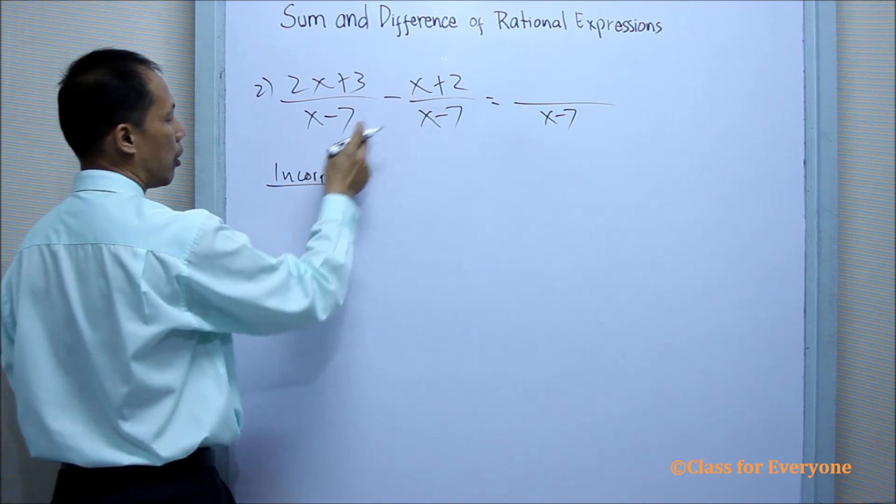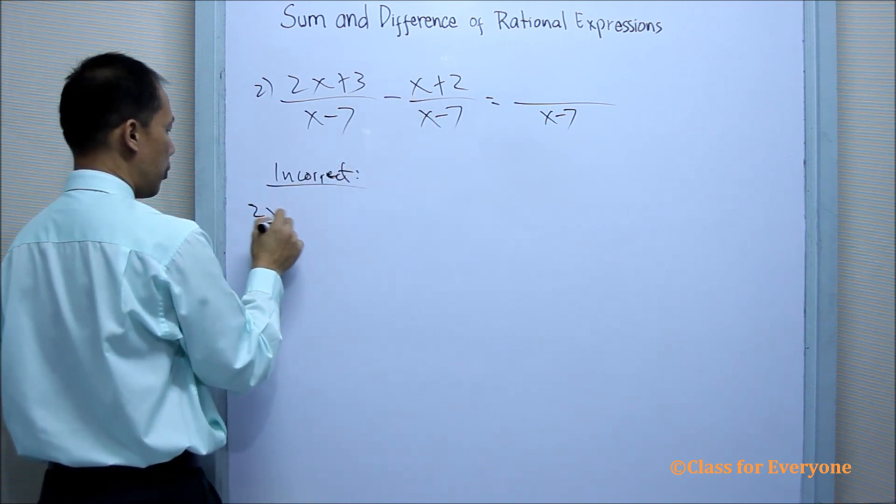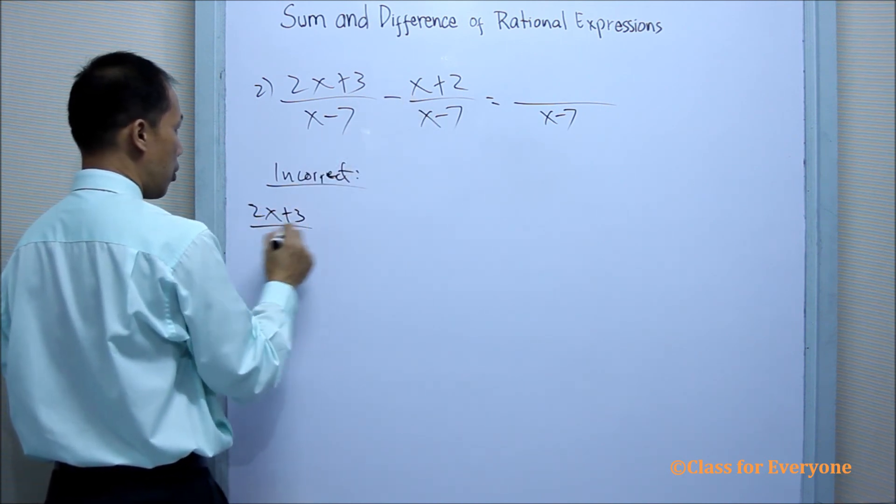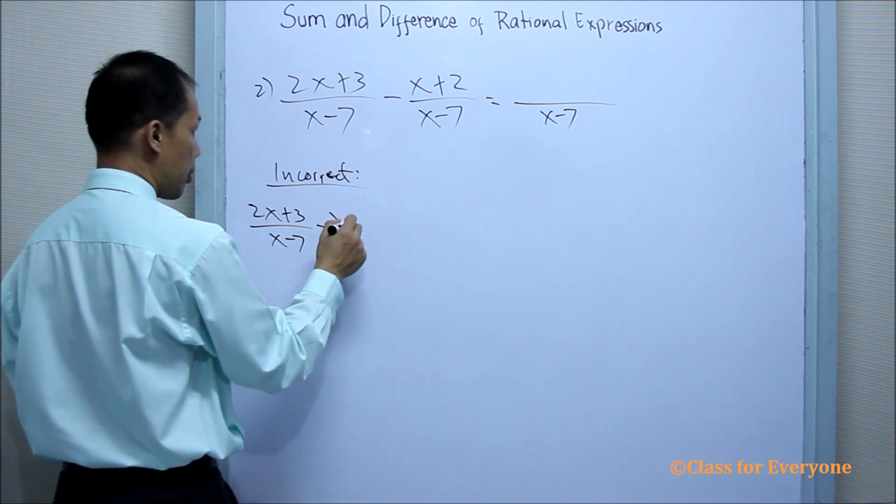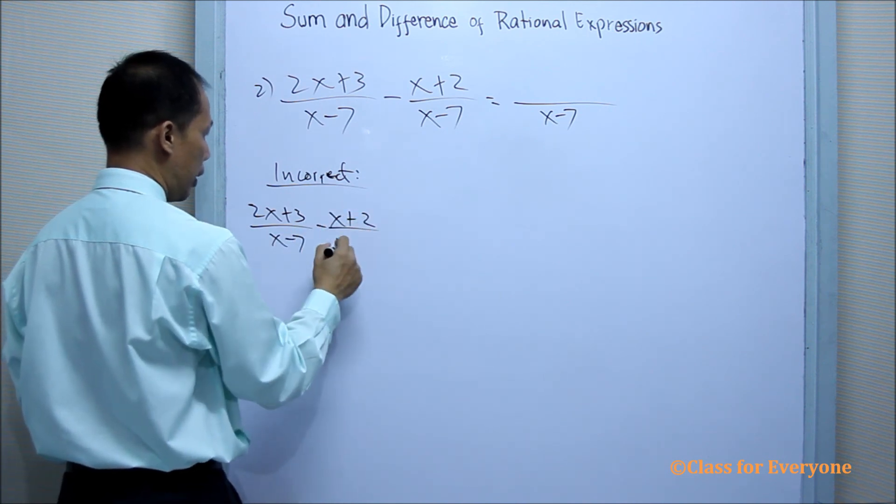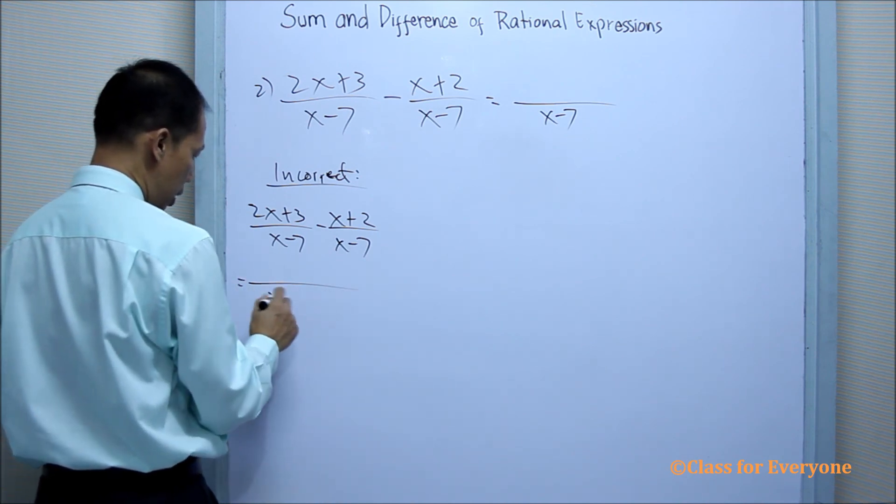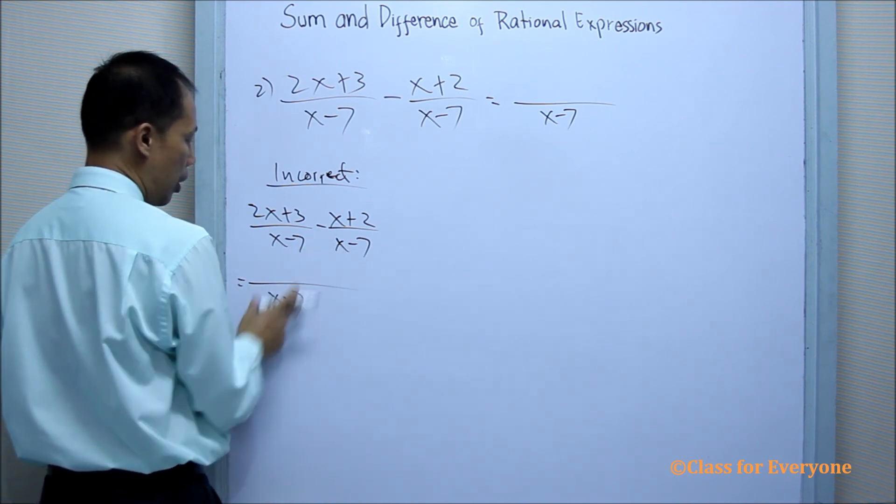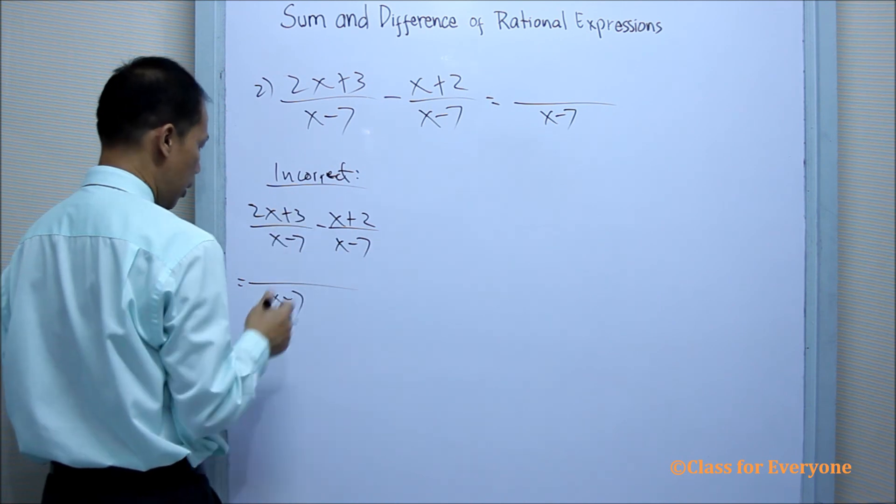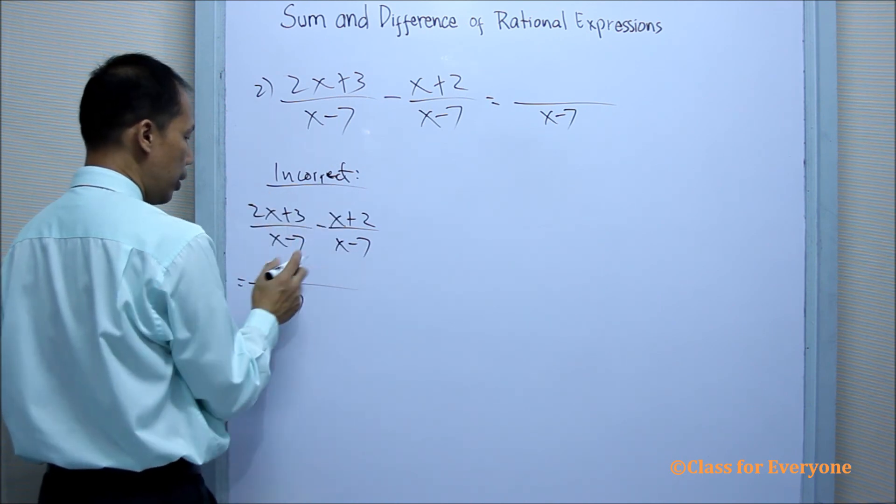Now, in subtraction of this rational expression, we have 2x plus 3 over x minus 7 minus x plus 2 over x minus 7. The answer of the student would be x minus 7. The denominator, just copy, it's okay. And then, the numerator combined.